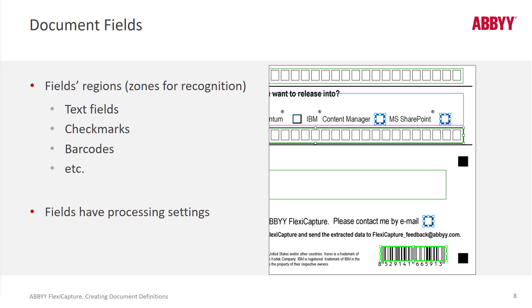We have the ability in FlexiCapture to read things like checkmarks, barcodes, and text fields. Each one of these fields has a number of processing settings to make sure we're getting the best results possible.